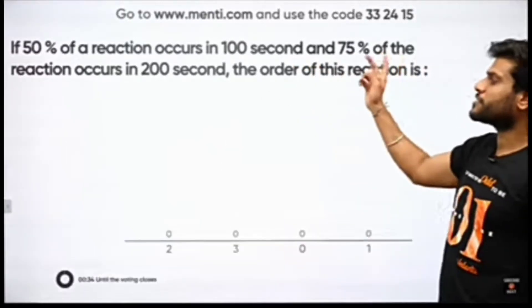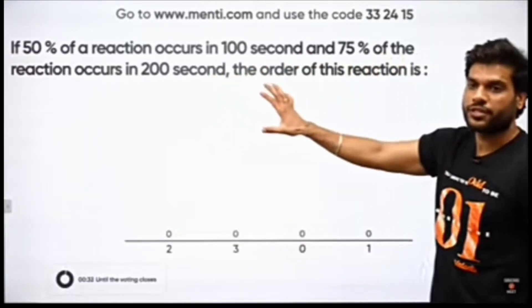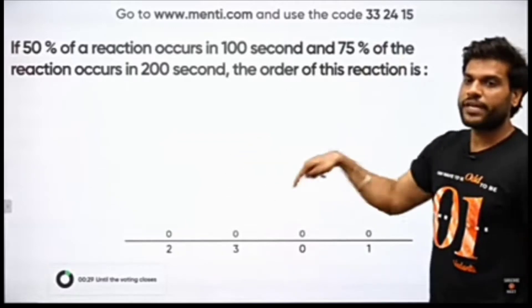If 50% of a reaction occurs in 100 seconds and 75% of the reaction occurs in 200 seconds, the order of this reaction is 2, 3, 0, or 1? It's easy to ask.